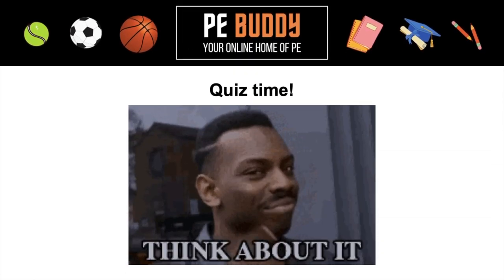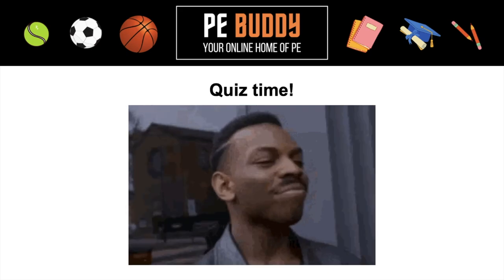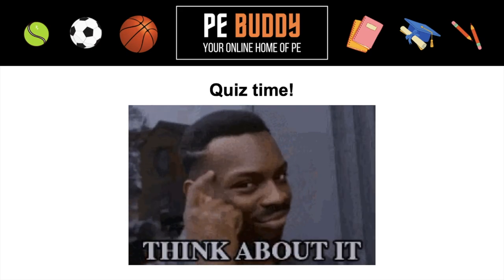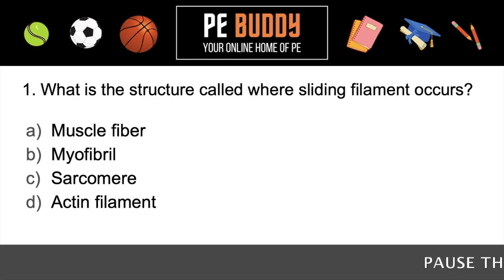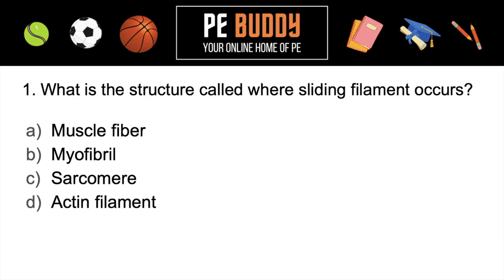Okay, it's quiz time. Let's see what you've learned. Question one: what is the structure called where sliding filament theory occurs? Muscle fiber, myofibril, sarcomere, or the actin filament? Pause the video, have a think, choose your answer. The correct answer is the sarcomere.